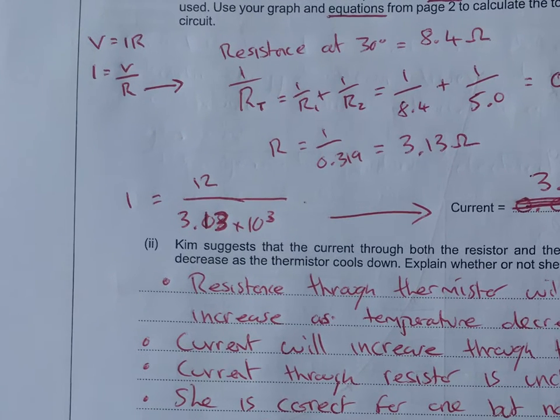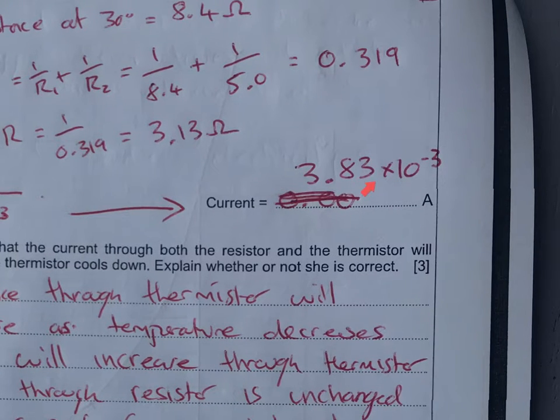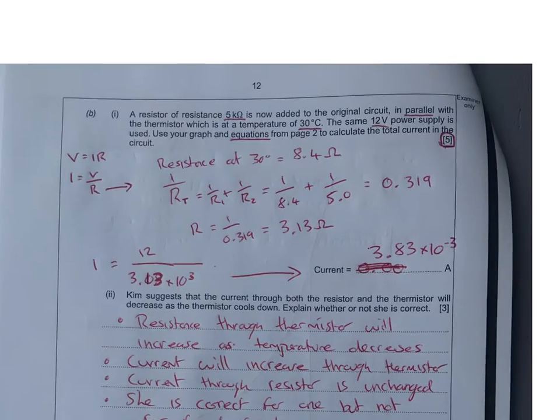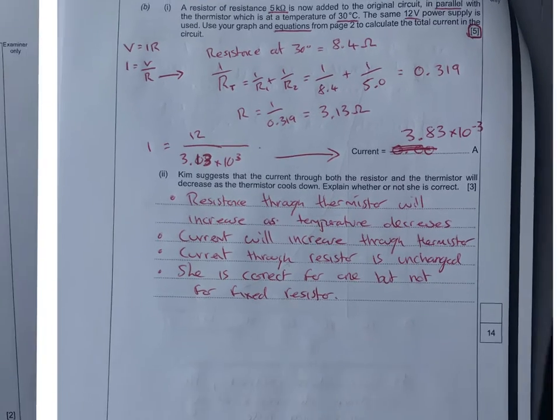Going back to the question, I which is current equals my 12 volts over 3.13 times 10 to the power 3 because it's a kilo ohm. That's going to come up with a current of 3.83 times 10 to the minus 3 amps. Five marks available for that, so that's why there was a bit to do.